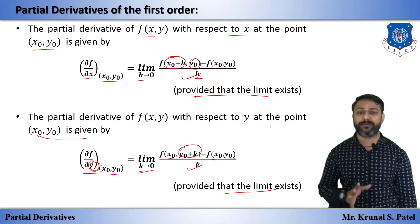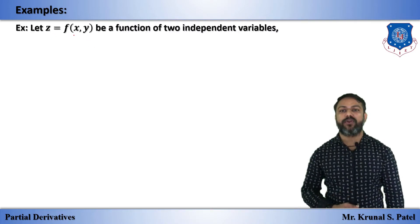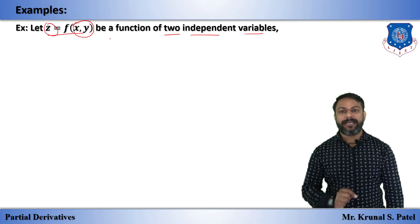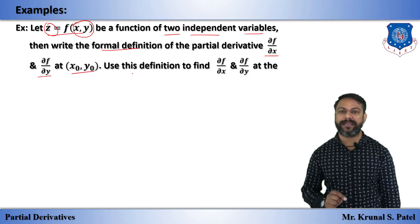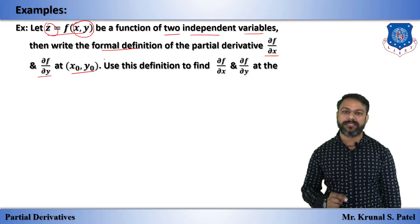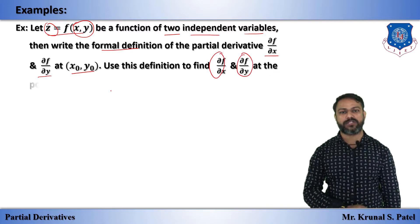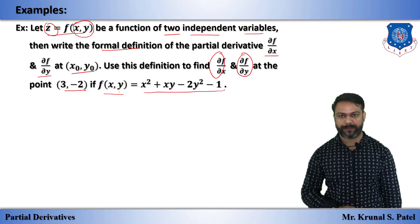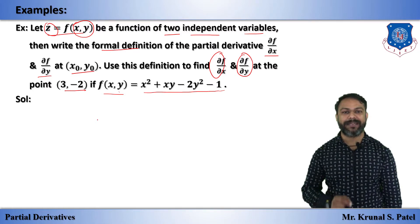Let's look at Example 1. Let z = f(x, y) be a function of two independent variables. First, write the formal definition of del f / del x and del f / del y at point (x₀, y₀). Then find the value of del f / del x and del f / del y at point (3, −2) for the function f(x, y) = x² + xy − 2y² − 1.